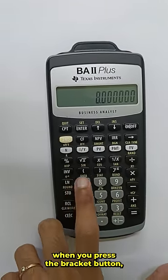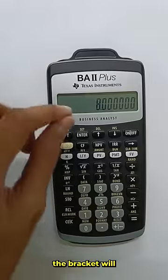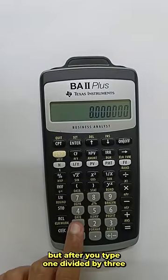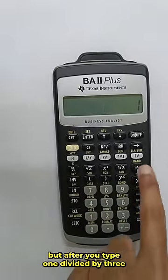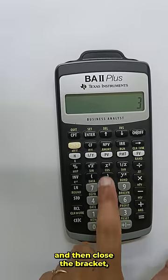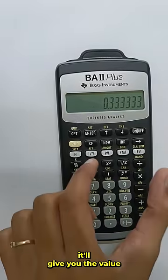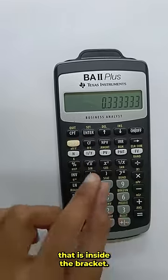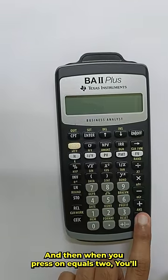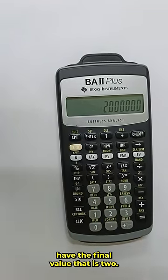Now remember, when you press the bracket button, the bracket will never show on the screen. But after you type 1 divided by 3 and close the bracket, it will give you the value inside the brackets. Then when you press equal to, you will have the final value, which is 2.